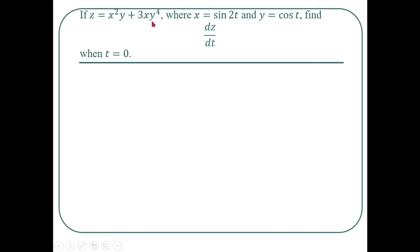Example: If z = x²y + 3xy⁴, where x = sin(2t) and y = cos(t), find dz/dt when t = 0. Here z is a differentiable function of x and y — it is a polynomial, so it is differentiable. And x = sin(2t), y = cos(t) are differentiable functions of t. Hence we can use the chain rule to find dz/dt.